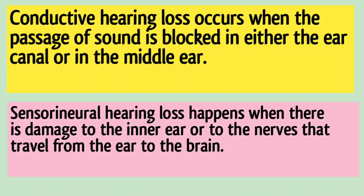Conductive hearing loss occurs when the passage of sound is blocked in either the ear canal or in the middle ear. Sensorineural hearing loss happens when there is damage to the inner ear or to the nerves that travel from the ear to the brain.